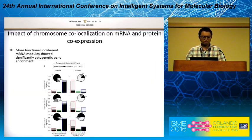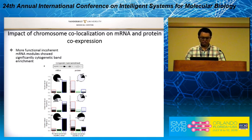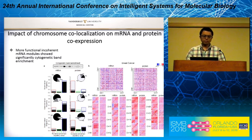We also performed cytogenetic band enrichment analysis and found that more functionally incoherent mRNA modules showed significant cytogenetic band enrichment, mainly because the impact of chromosomal co-localization on mRNA co-expression is very strong. But this impact is markedly diminished at the protein level.